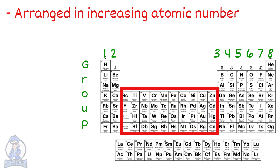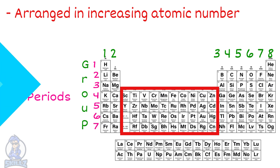The rows are called periods. There are 7 periods. The first one is made of hydrogen and helium.